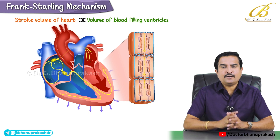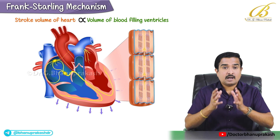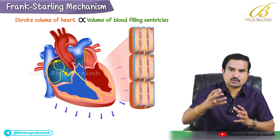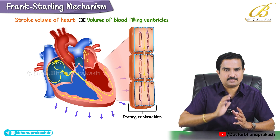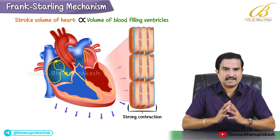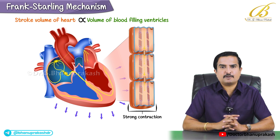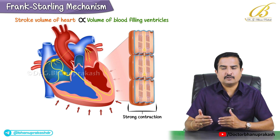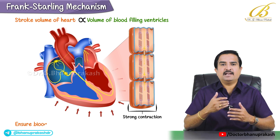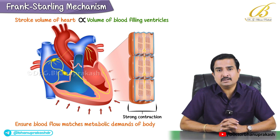In simpler terms, when more blood returns to the heart, the heart muscle fibers stretch more, and this greater stretch leads to greater contraction — this is the Frank-Starling mechanism. This relationship is very crucial for balancing the output of the left and right ventricles and ensuring that blood flow matches the metabolic demands of the body.